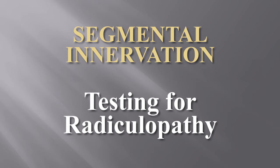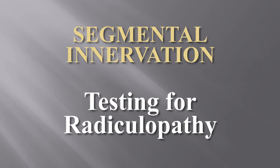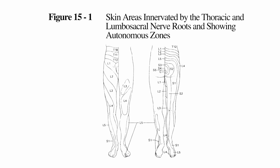As you're aware, testing for radiculopathy involves testing for motor, sensory and reflex function. I'm going to concentrate on the more commonly involved nerve roots, that is L4, L5 and S1. With regard to sensory testing, the dermatomal distribution depends on which book you read. This is figure 15-1 of AMA 5, showing the L4 sensory distribution on the medial distal leg, ankle and foot; L5 on the dorsum of the foot extending towards the big toe; and S1 being the lateral border and sole of the foot.